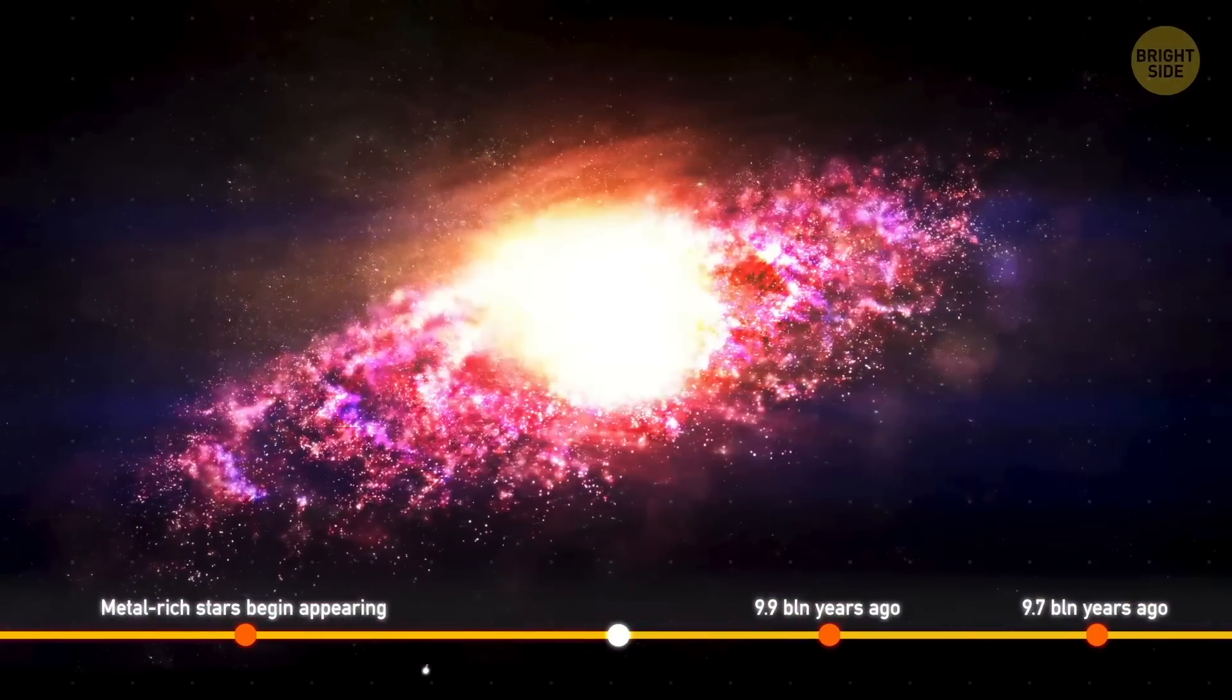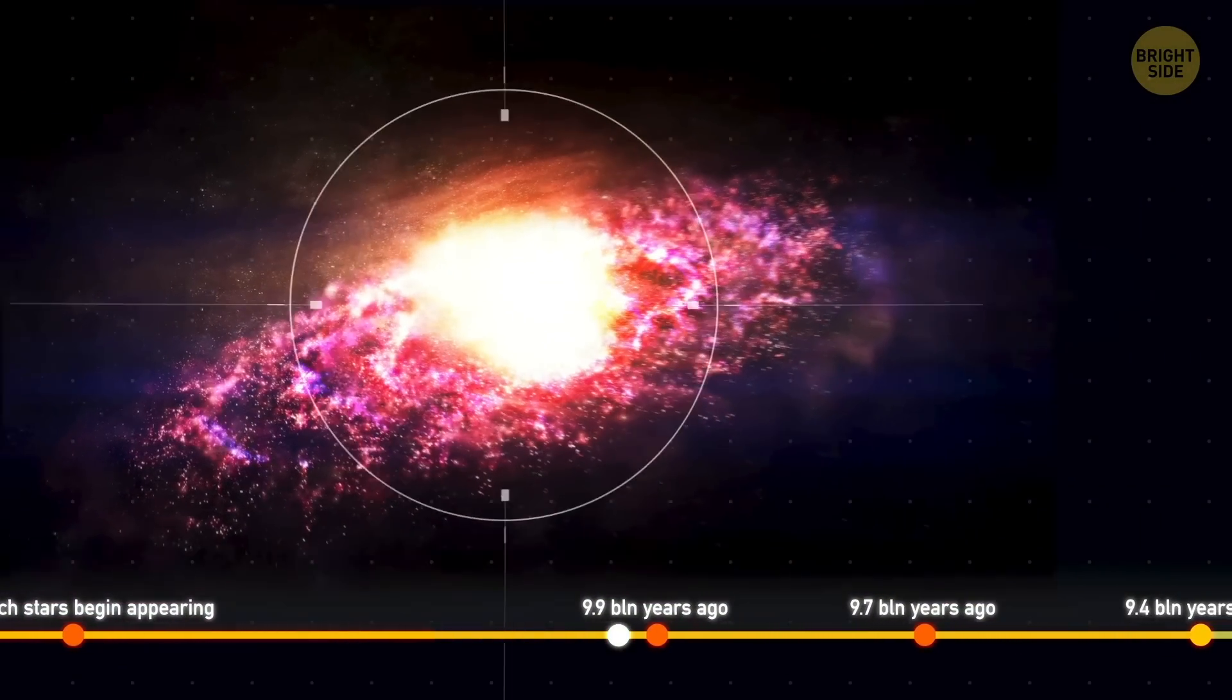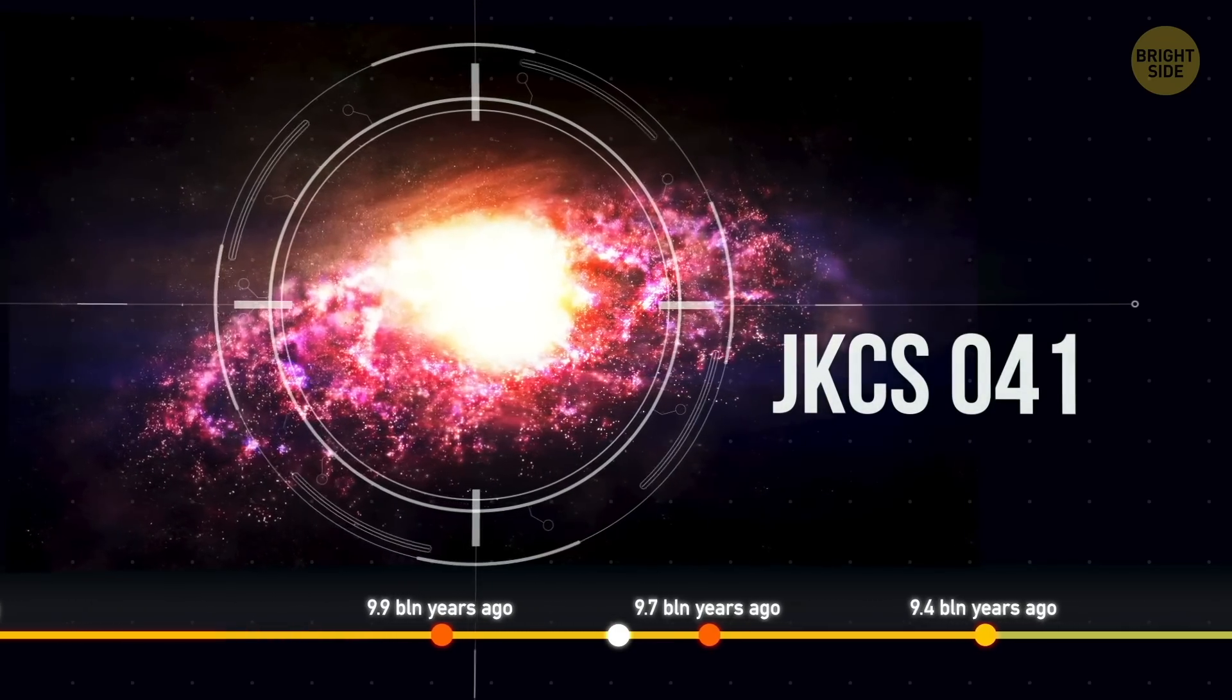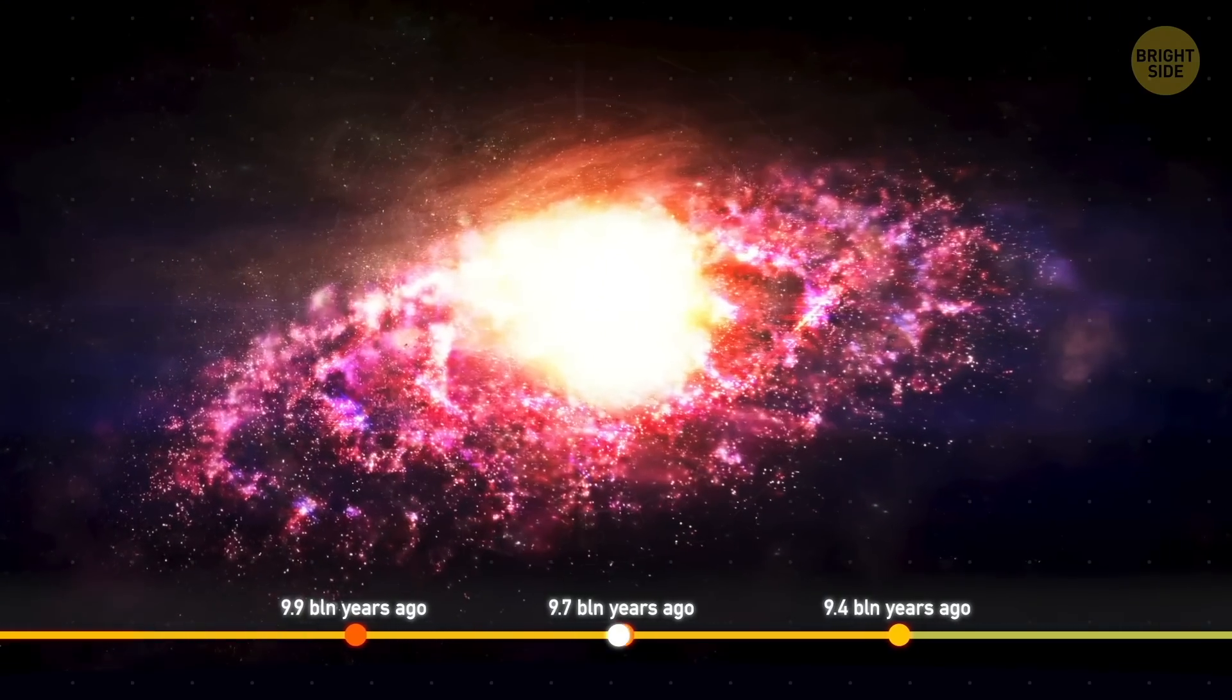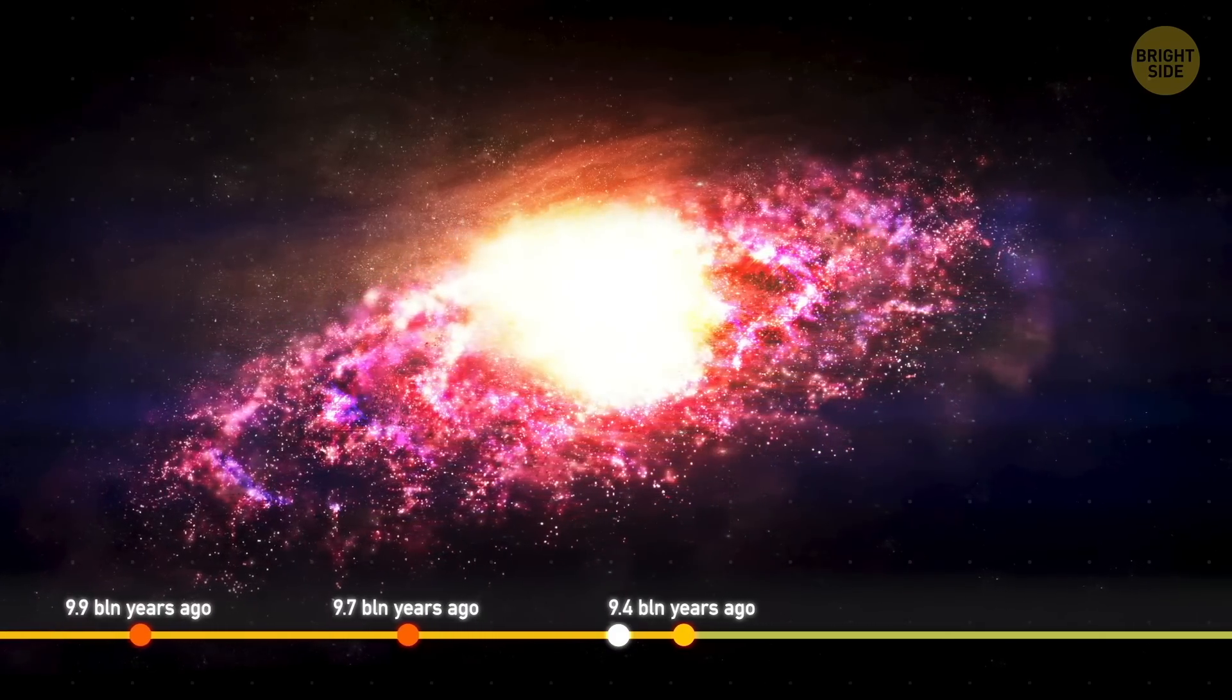With less than 10 billion years before humans appeared, the first group of galaxies emerged, JKCS 041. It's the farthest known galactic cluster, born just 200 million years before the universe reached a third of its current size, a mere moment on a cosmic scale.